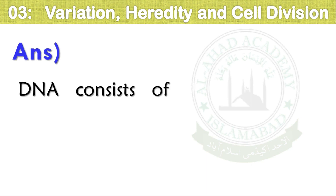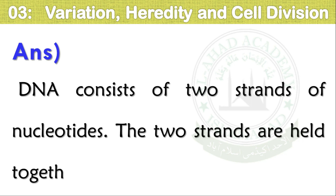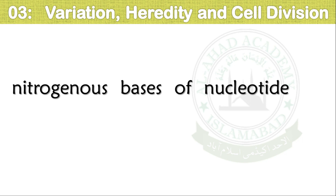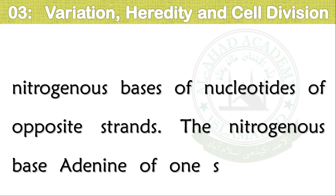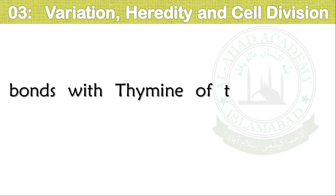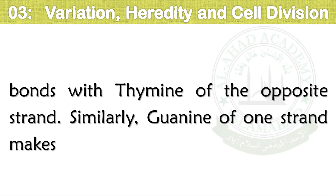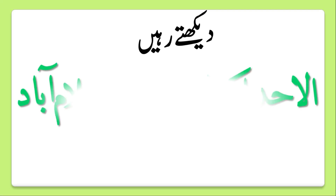Question number seven: What is the structure of DNA? DNA consists of two strands of nucleotides. The two strands are held together by hydrogen bonds between nitrogenous bases of nucleotides of opposite strands. Adenine of one strand makes bonds with thymine of the opposite strand; similarly, guanine of one strand makes bonds with cytosine of the opposite strand.